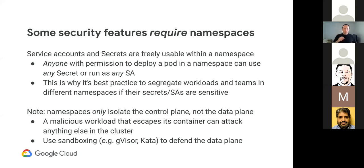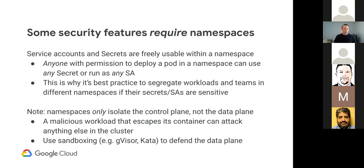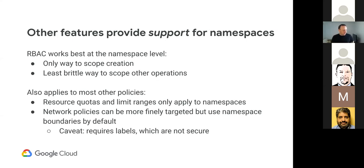I should note that while namespaces provide isolation in the control plane — which is stuff you interact with by typing kubectl — it doesn't do anything at all about the data plane. So even if two teams were safely segregated at the control plane level, if one of them had a malicious workload that was able to break out of the container and attack other stuff on the cluster, namespaces aren't going to help you at all. For that, you need techniques like sandboxing — something like gVisor or Kata Containers to help defend the data plane. That's out of scope of this talk.